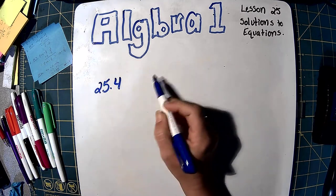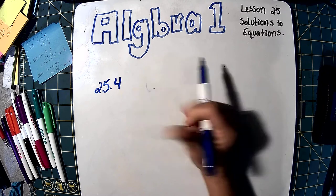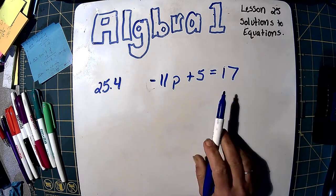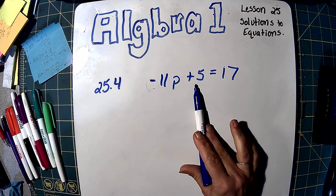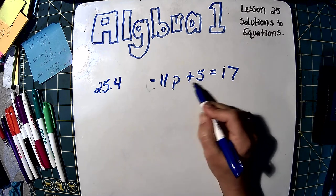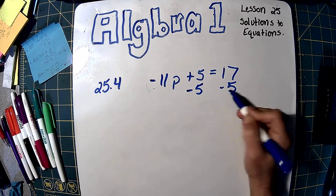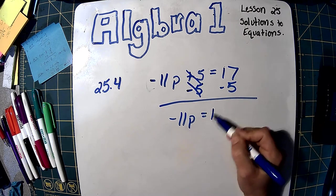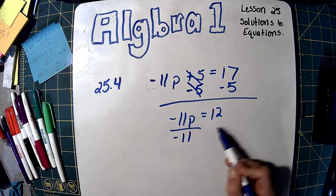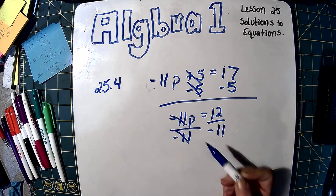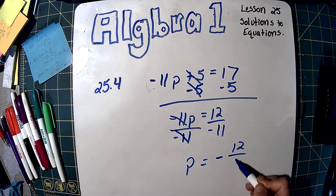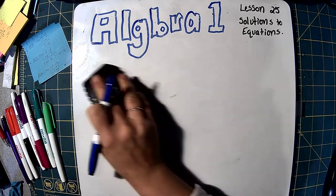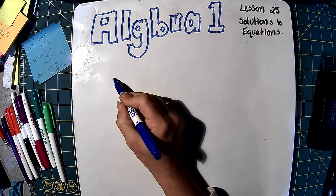25.4: Negative 11p plus 5 equals 17. Here's our variable. We do have some addition on the side of the equation, so we're going to do the opposite of plus 5, which is minus 5. We do that on both sides. These two cancel and we get negative 11p equals 12 over 11. You can just leave it like that. So you always get rid of your addition and subtraction first, then your multiplication.